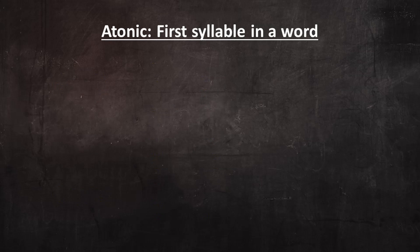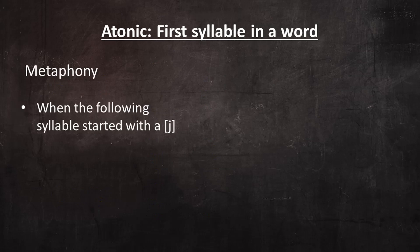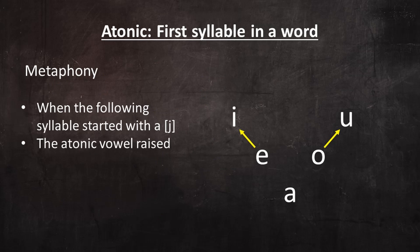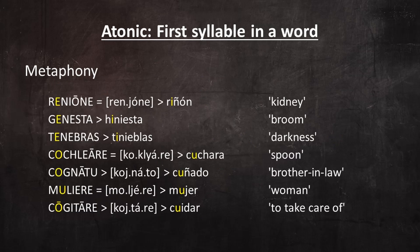So one way that vowels in word-initial atonic syllables were different from other atonic vowels and more like tonic vowels is that they underwent metaphony. In other words, when the following syllables started with a yod sound, the atonic vowel in the first syllable raised a step from E to I or from O to U. Pause the video and study these examples.